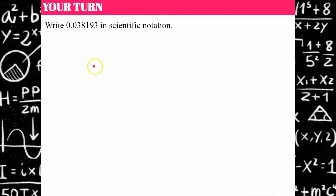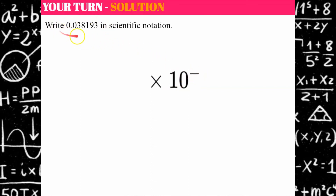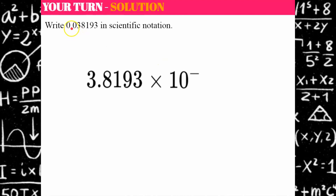One more — try this one. Welcome back. I need my base of 10 and I'm going to have a negative exponent because this is a number smaller than one. I'm going to move my decimal point to the right of three so I have one significant digit to the left. That means I moved the decimal point one, two spaces — giving me an integer exponent of negative two. So 3.8193 multiplied by 10 to the negative two is scientific notation for this value.